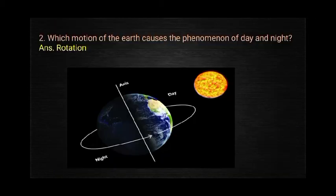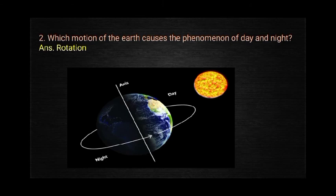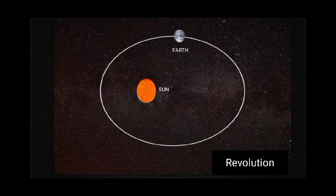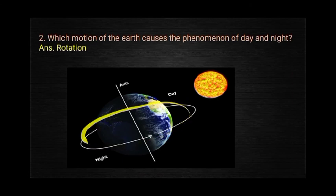Question 2: Which motion of the Earth causes the phenomenon of day and night? Day and night occur due to rotation. It is the daily spinning of the Earth that causes day and night — not a yearly cycle where one full year is day and the next is night. Day and night happen on a daily basis, so the answer is rotation.